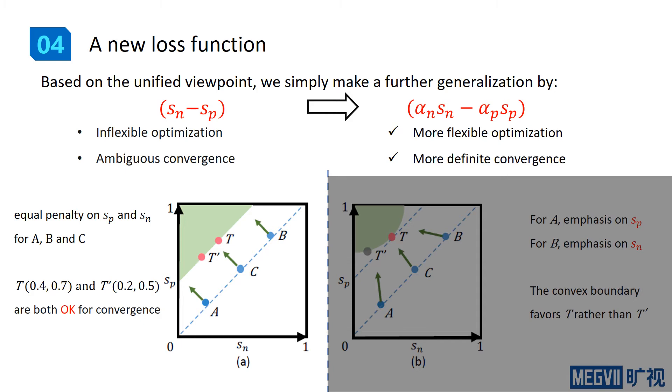In other words, we assign an independent weighting factor to each similarity score. The motivation here is that we find reducing s_n minus s_p is prone to inflexible optimization and ambiguous convergence.